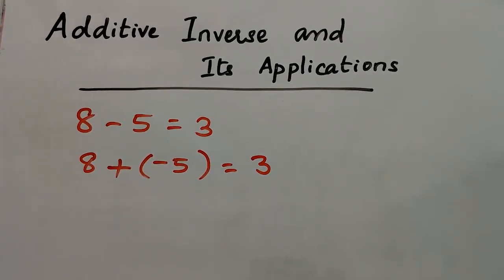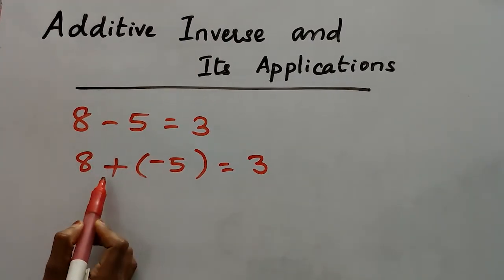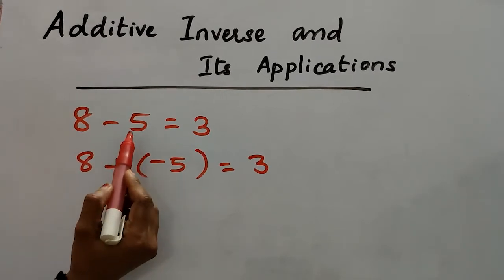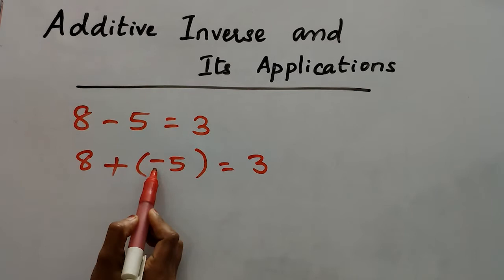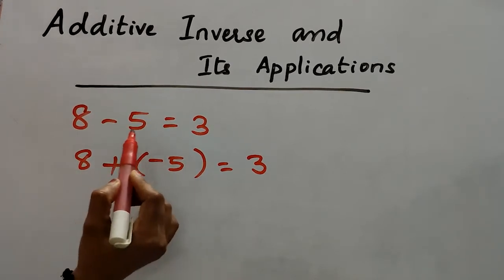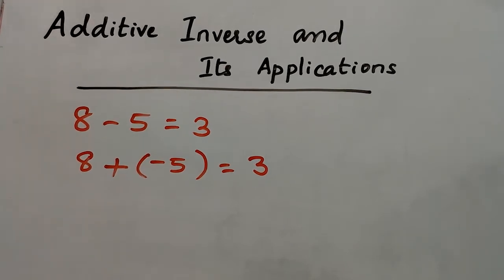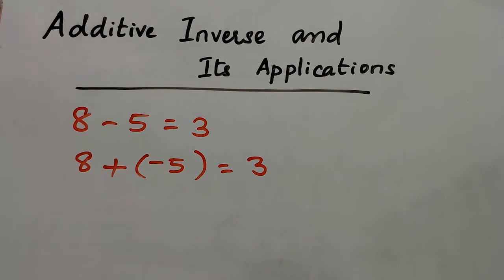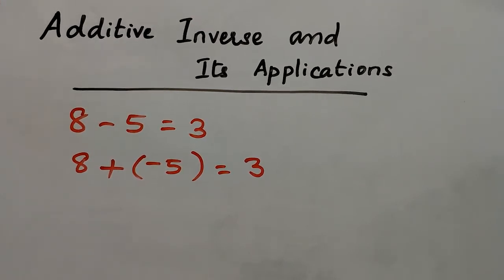For both questions we got the same answer. That means we can change the subtraction to addition. We know that the additive inverse of 5 is negative 5, so we get the answer as 3. This shows that we can subtract by adding the additive inverse of the number being subtracted.